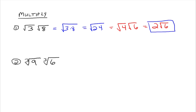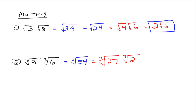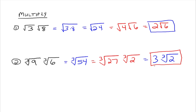Let's try another one. Suppose we had the cube root of 9 times the cube root of 6. Since they're both cube roots, we can multiply: 9 times 6 gives the cube root of 54. Is the cube root of 54 simplified, or can we simplify it further? The largest perfect cube that divides evenly into 54 is 27. So we rewrite that as the cube root of 27 times the cube root of 2, which gives us 3 times the cube root of 2.